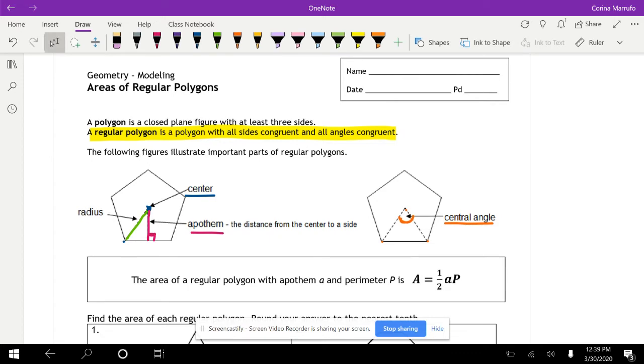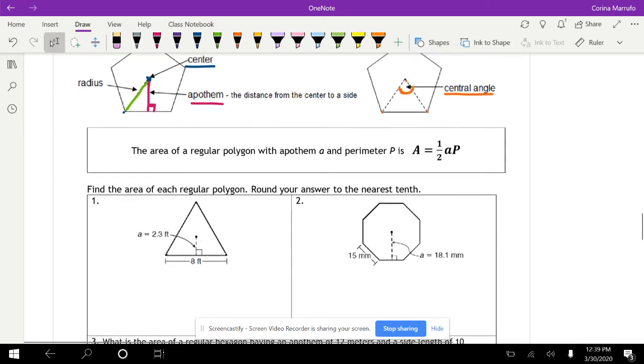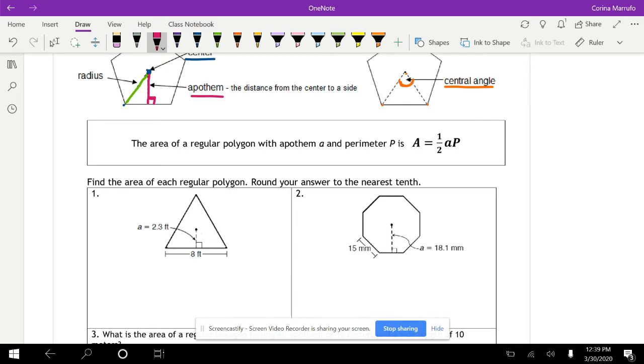So what we're doing today is finding the area of these polygons. There's two things that we need for the area of the polygons. We're going to need the little a, which is the apothem, and then the capital P, which stands for perimeter.